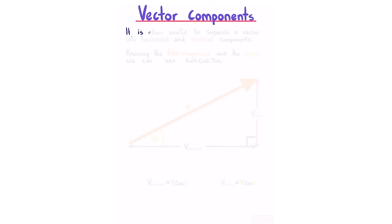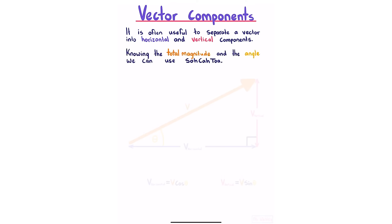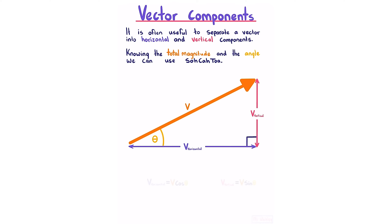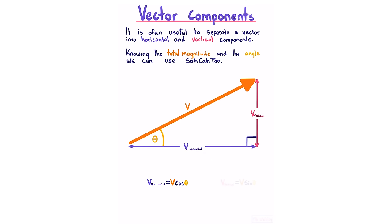Vector components. It is often useful to separate a vector into horizontal and vertical components. For a vector with magnitude v and angle theta to the horizontal, using the CAH relationship: cosine of theta equals v-horizontal over v, giving v-horizontal equals v cosine theta. Using the SOH relationship: sine of theta equals v-vertical over v, giving v-vertical equals v sine theta.